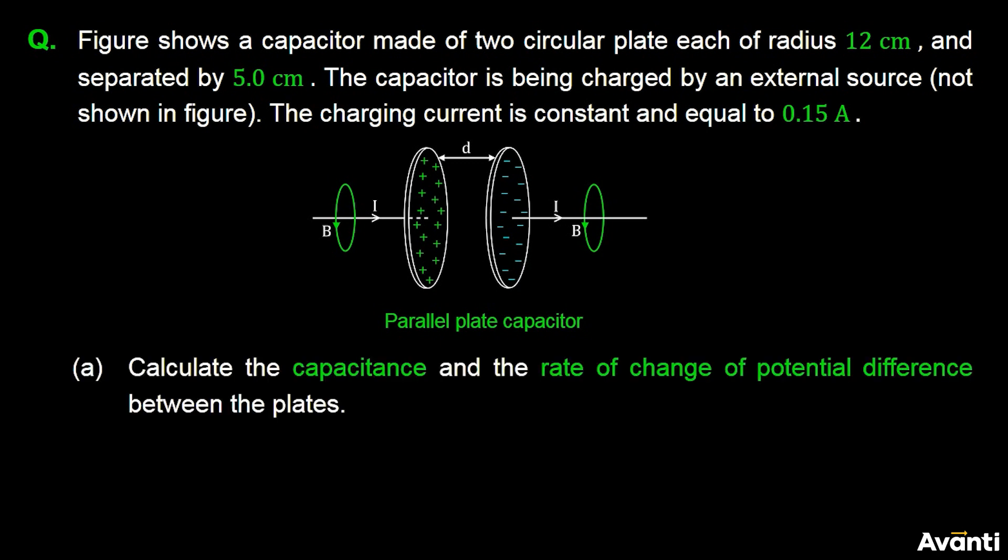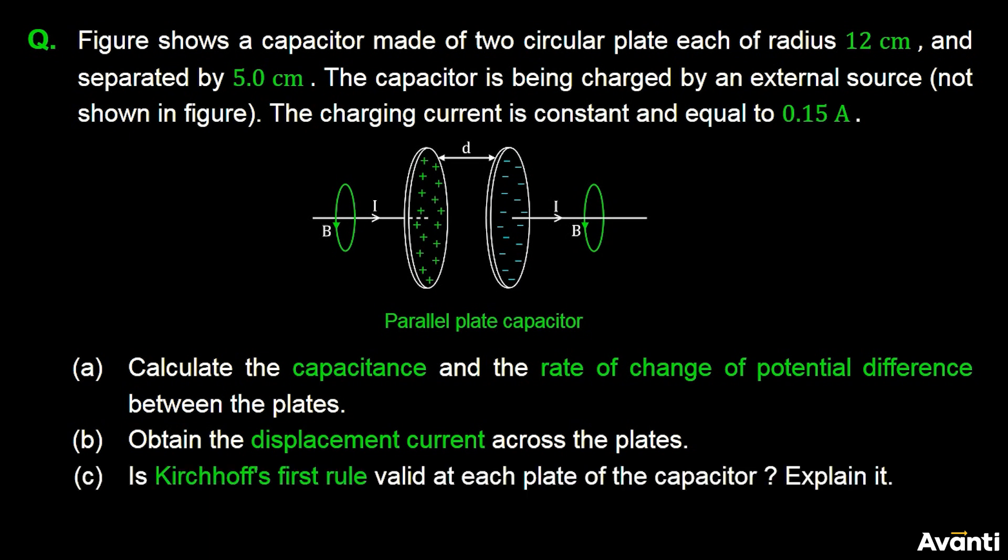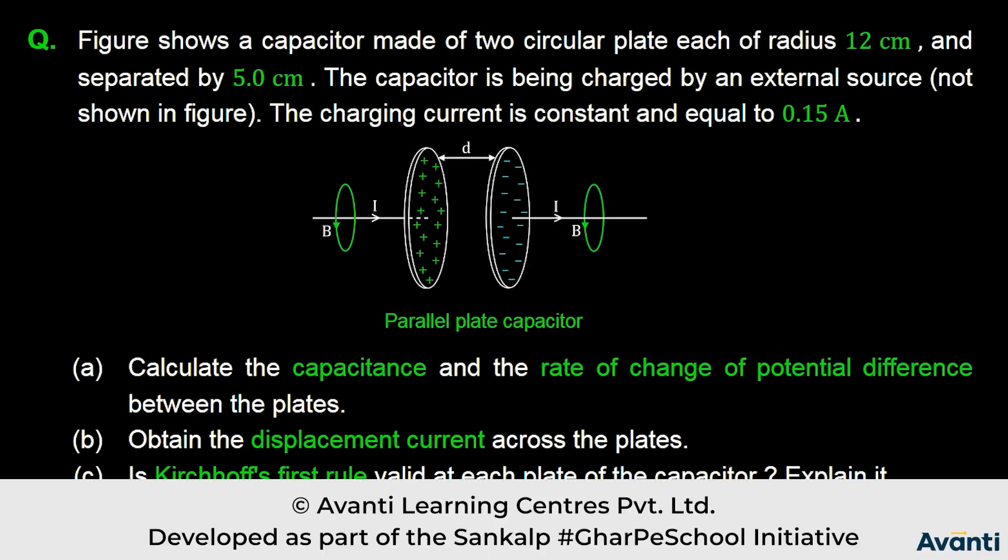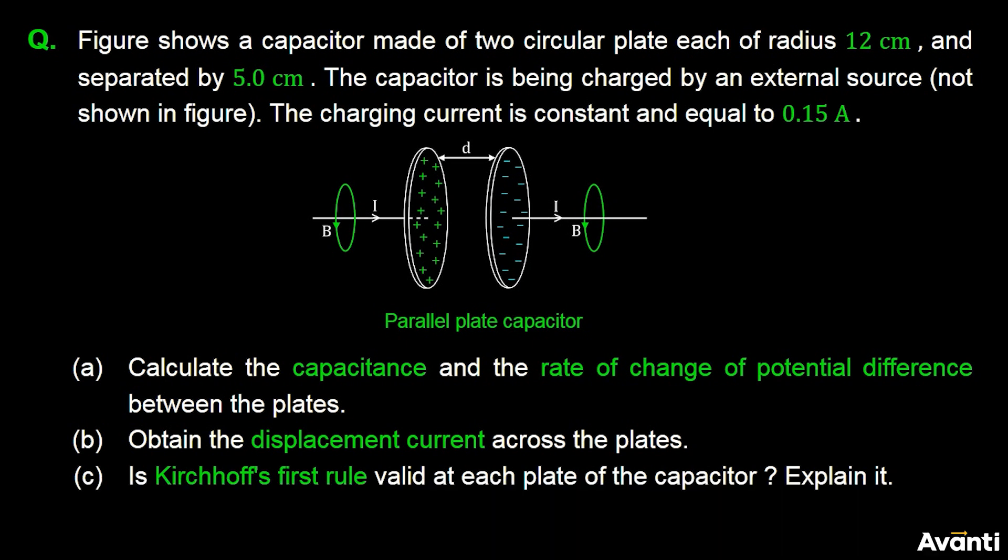We have to calculate the capacitance and the rate of change of potential difference. Then we have to calculate the displacement current and how the displacement current flows. Finally, is Kirchhoff's first rule valid at each plate of the capacitor? Kirchhoff's current law, what is valid here? Let's explain.